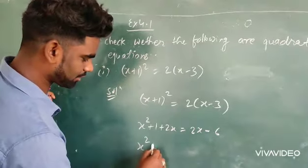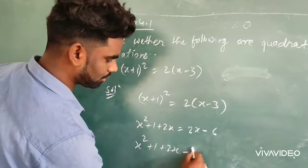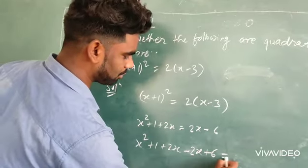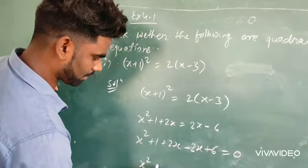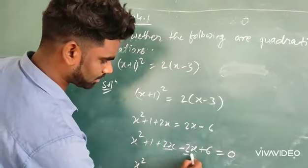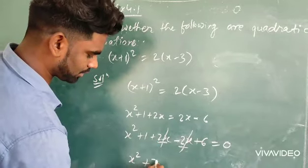Now, x² + 1 + 2x - 2x + 6 = 0. Now, x² + 2x - 2x cancel out. 6 + 1 is 7.